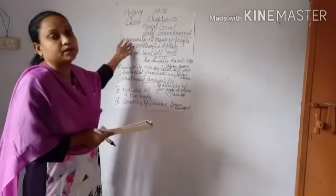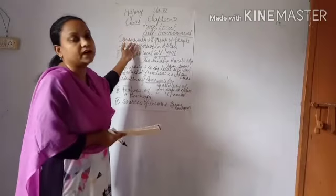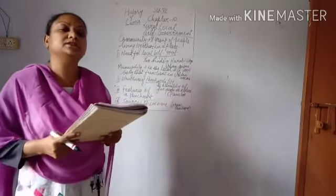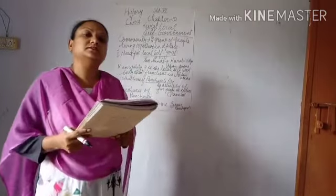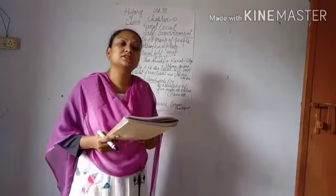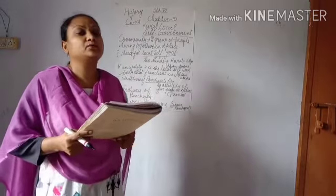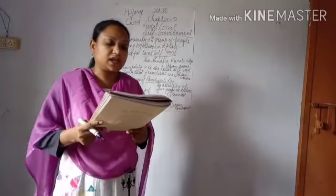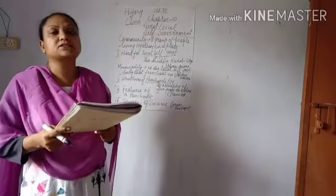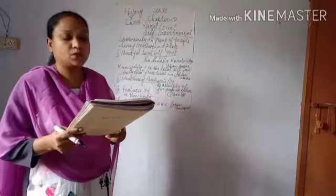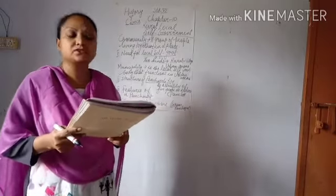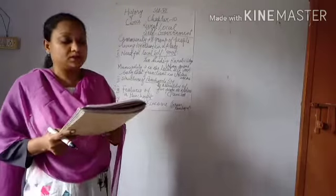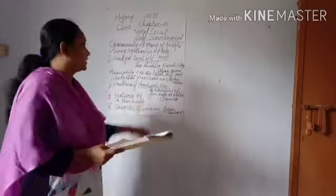First we will start with the community. What do you mean by community? A group of people living together in a place is called a community. Community means a group of people who are living together following different religions and different cultures in one place. People living in villages, towns and cities need facilities such as clean drinking water, electricity, well-constructed and properly maintained roads, and efficient medical services. All these things are necessities for people who live in the village area.